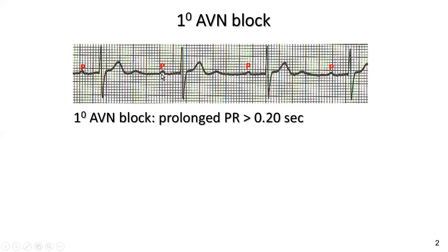The very last part of diastole is the atrial contraction, which tops up the ventricles with the last 20 to 30% of ventricular filling, just prior to the ventricle contracting — shown as the QRS or R wave. The ideal interval between atrial and ventricular contraction is 0.12 to 0.20 seconds. In first degree AV nodal block, that duration is prolonged to more than 0.20 seconds.